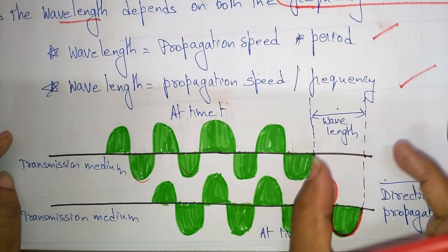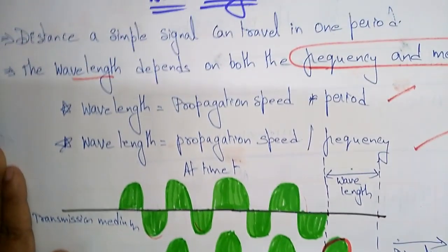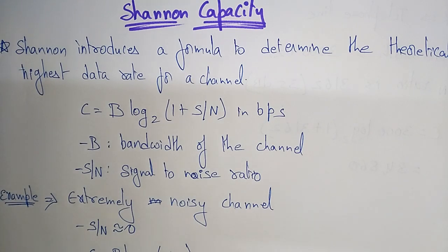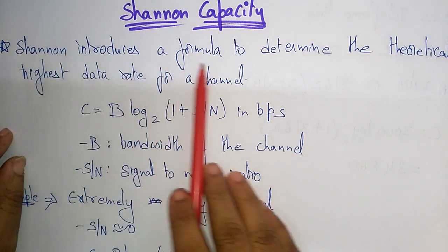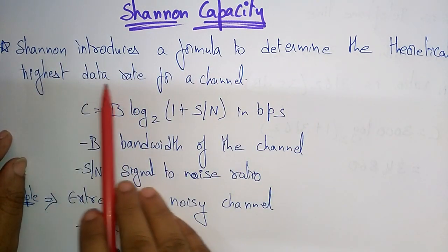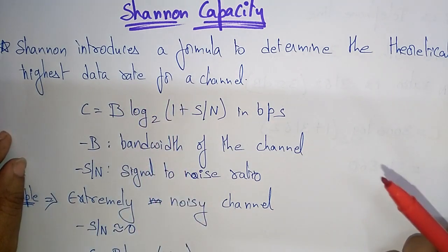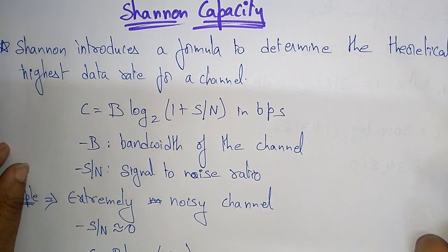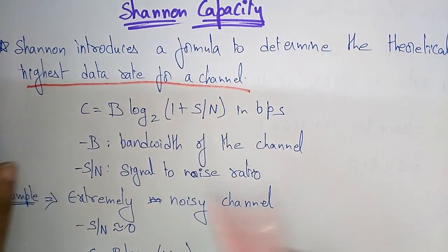Now let's look at the Shannon capacity. Shannon introduced a formula to determine the theoretical highest data rate for a channel. The main use of this formula is to calculate the maximum data rate that any given channel or transmission media can support.